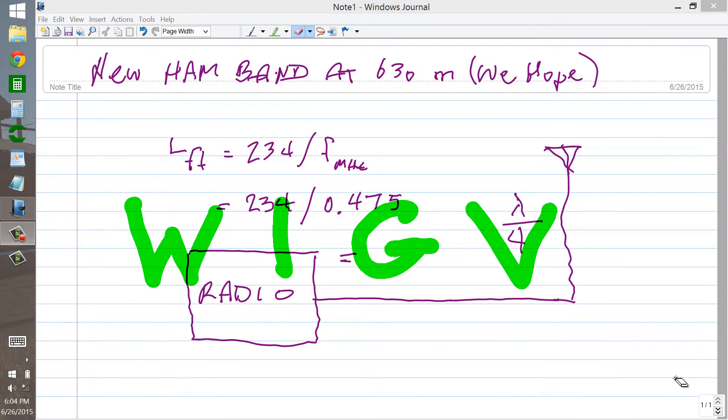Stan Jibalisco here, proprietor and operator of amateur radio station W1GV. Here to just describe a technical solution to listening on the new ham band at 630 meters.